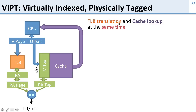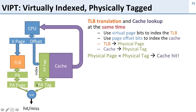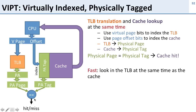In a VIPT cache, we do TLB translation and cache lookup at the same time. We use the virtual page number for the TLB lookup and the page offset bits to index into the cache. The TLB gives us the physical page, the cache gives us a physical tag, and we compare them — a physical address comparison that gives us all the benefits of the TLB. If the offset belongs to another program, the physical tags won't match and we'll get a miss. This is fast — we don't wait for the TLB before looking in the cache — and safe, because we compare physical address tags.